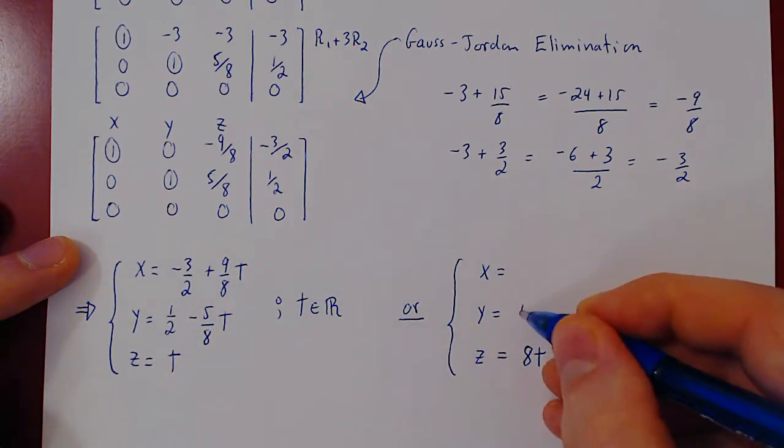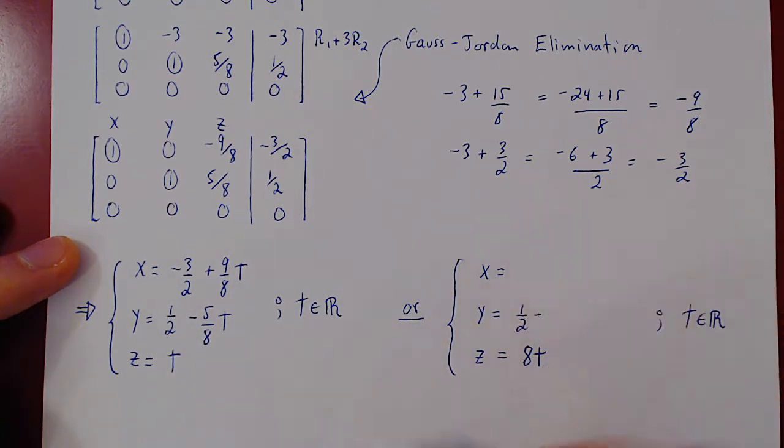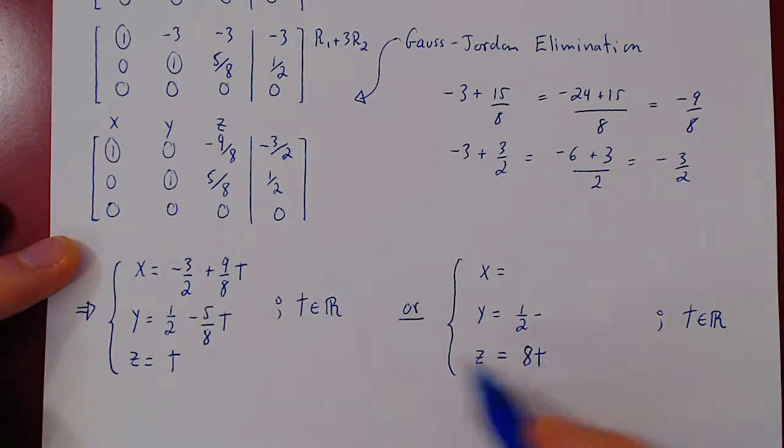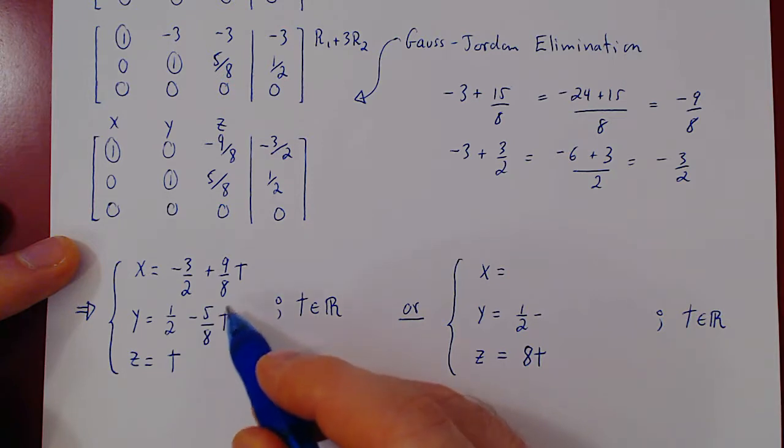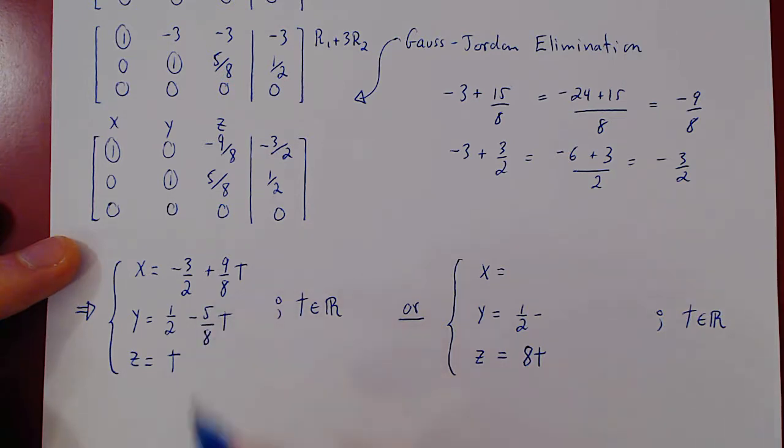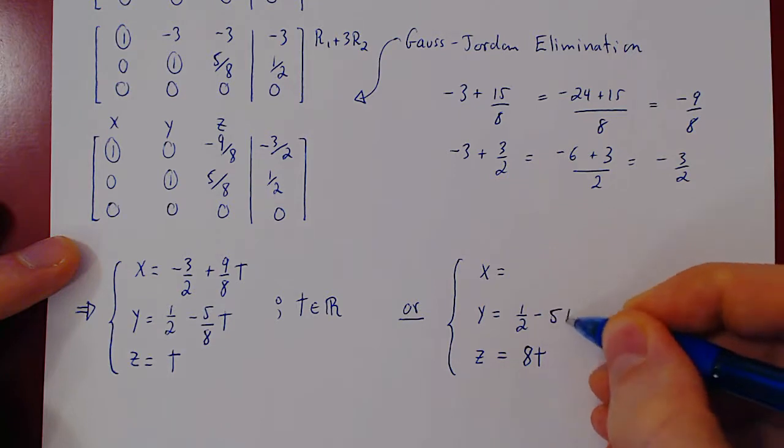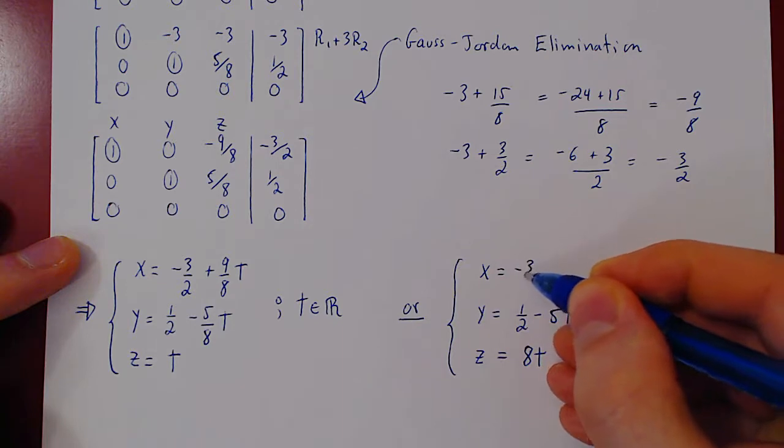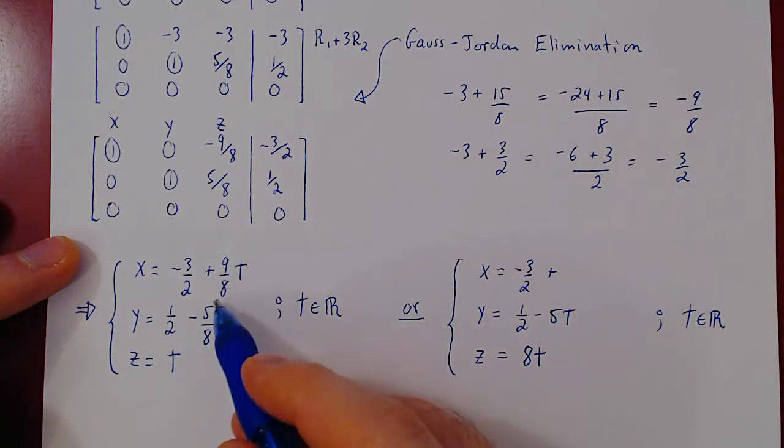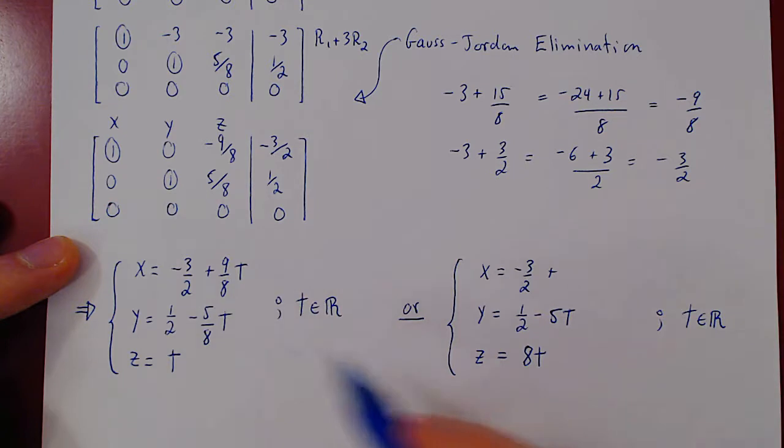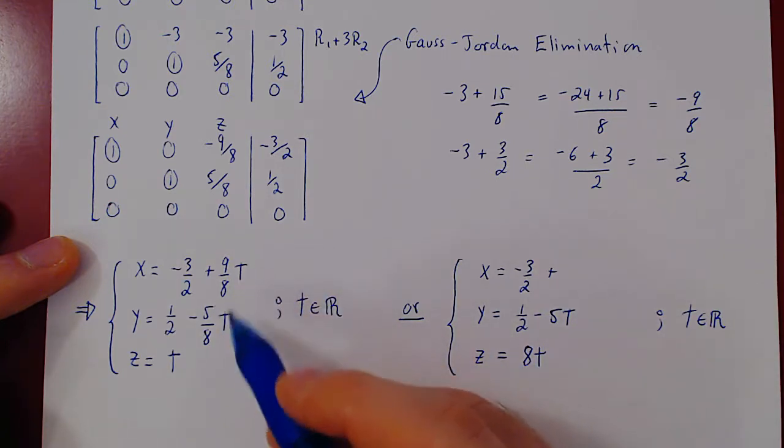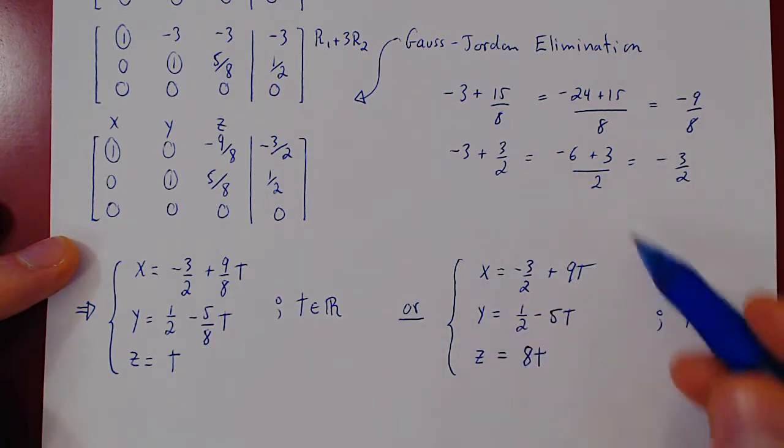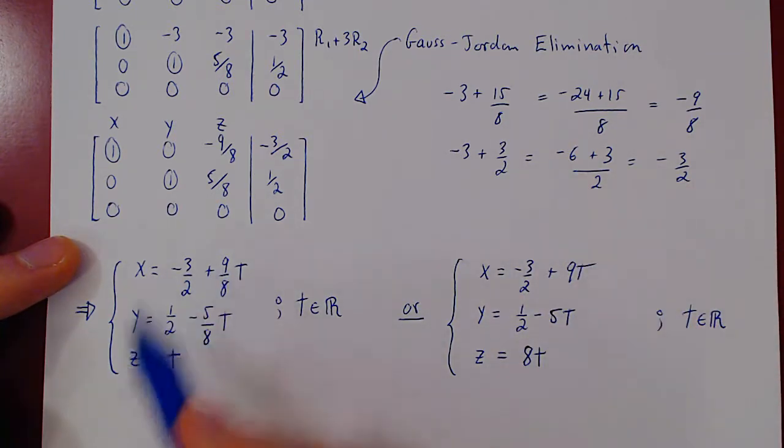So we'll get 1 half minus 5 over 8, and now we have replaced t by 8t. So if you replace t by 8t, you'll cancel the 8 and be left with negative 5t. Same thing for x, negative 3 half, plus 9 over 8. Instead of t we have 8t, the 8's cancel and we're left with 9t. And now this is a slightly better form of our solution set.